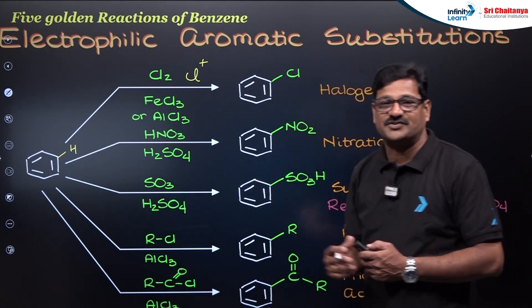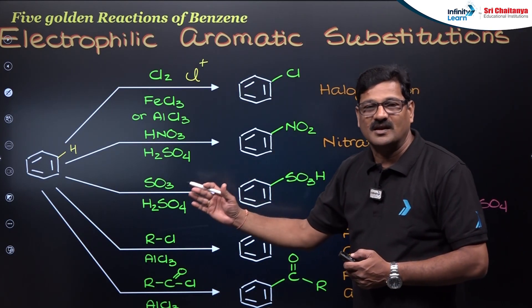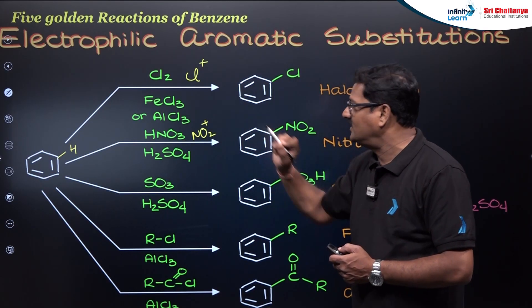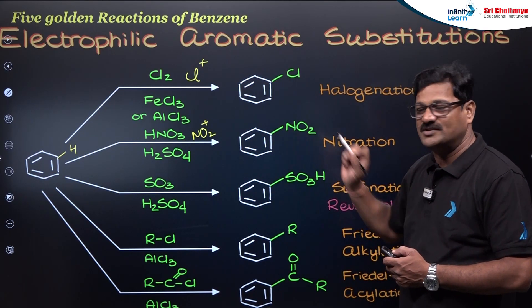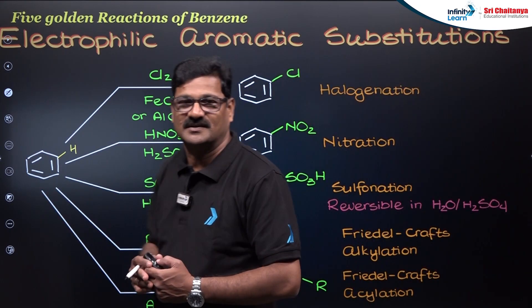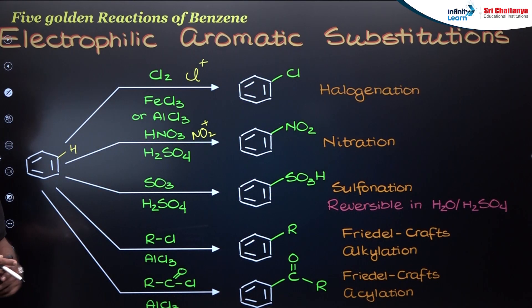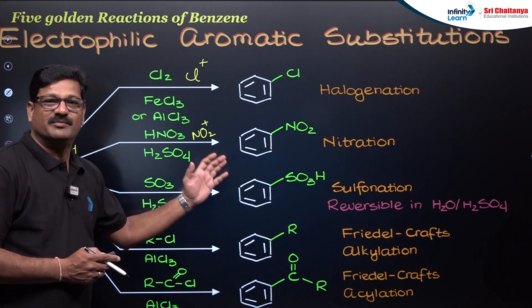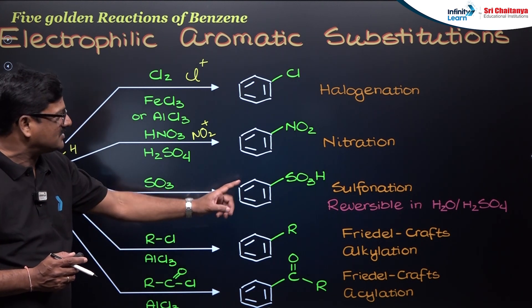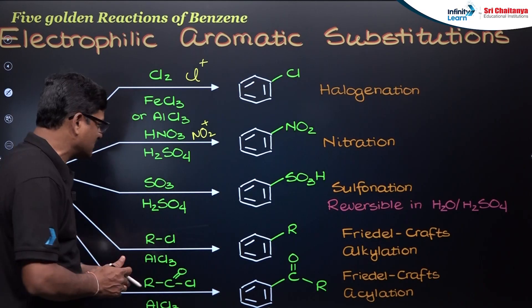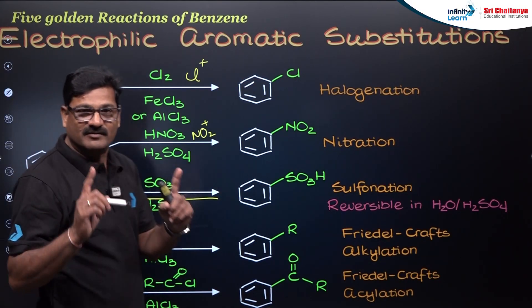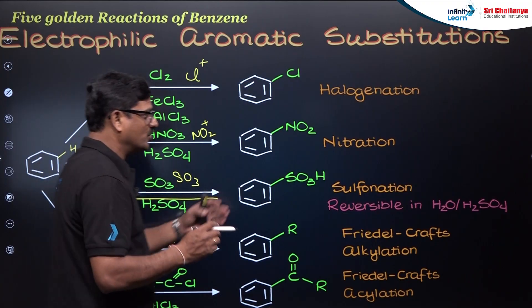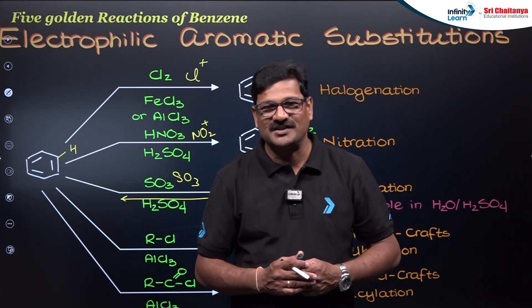When benzene is treated with HNO₃ and H₂SO₄ you get nitrobenzene. For sulfonation, all the other reactions are irreversible, while this reaction is reversible, where the electrophile is SO₃ itself, and you get benzene sulfonic acid.